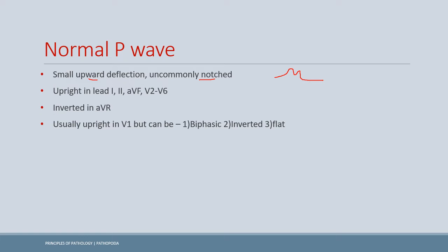In normal ECG, leads I, II, aVF, and chest leads V2 to V6 are generally upright. The P wave is inverted in aVR because aVR is positioned nearer to the SA node; all depolarization vectors move opposite to the aVR axis, creating a negative deflection — that is why P wave in aVR is inverted.